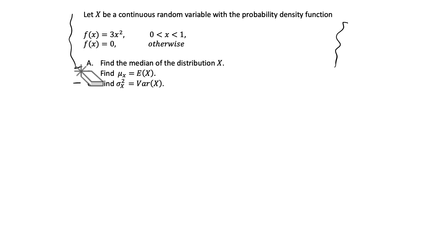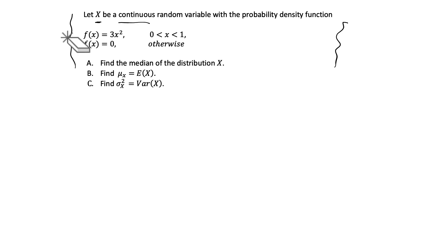This is a video similar to one I did a couple months ago, where x was a discrete random variable. We were given the PMF, or the probability mass function, which is the probability distribution for discrete variables. So this is the continuous random variable version of that problem. When you have a continuous random variable, you're given a PDF, and we're going to solve for the three parts of the question.